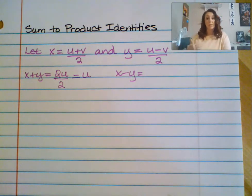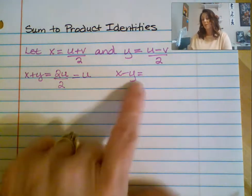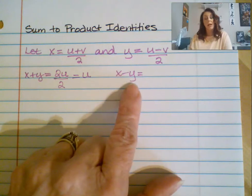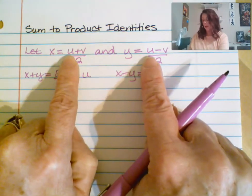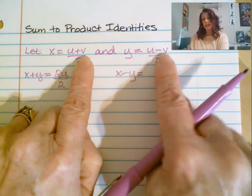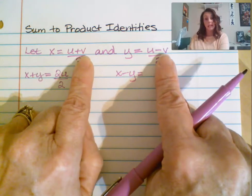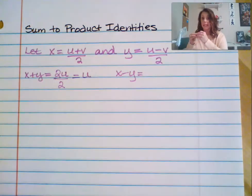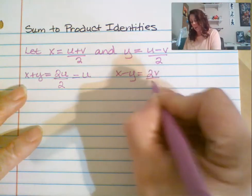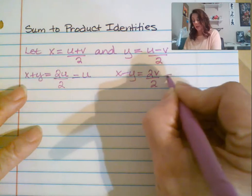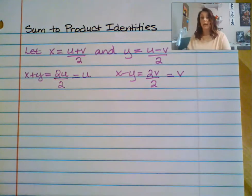Now let's do the same thing but subtract. When subtracting y, you have to remember to subtract both parts of the numerator. So u minus u — the u's cancel out. Then v minus negative v makes them add together, giving us 2v over the common denominator 2, which means x minus y simplifies to v.